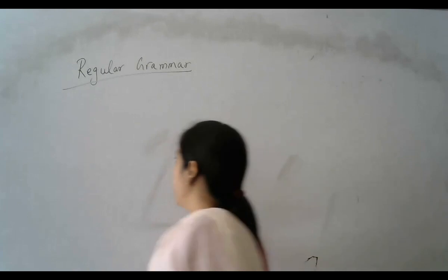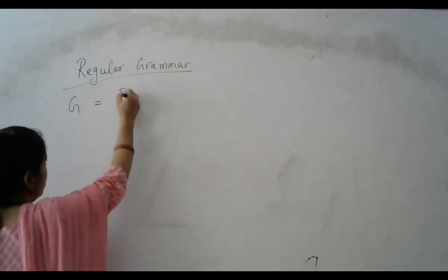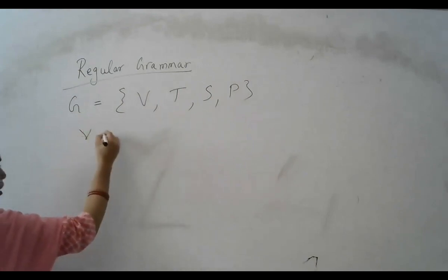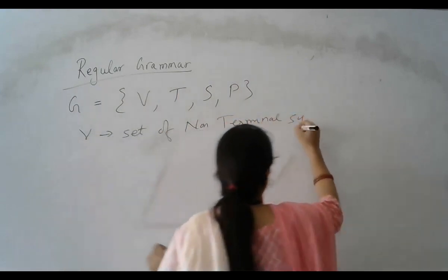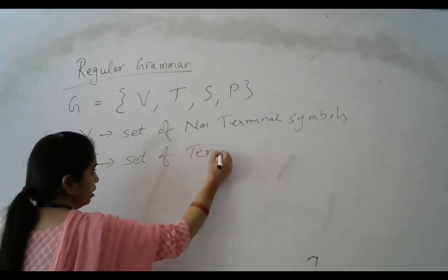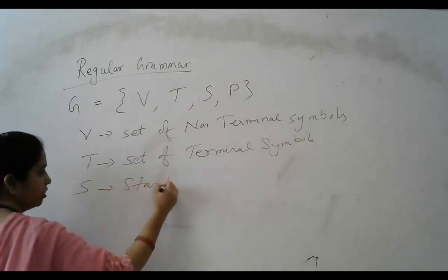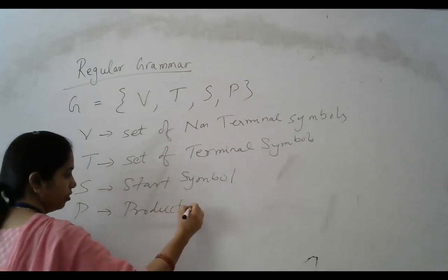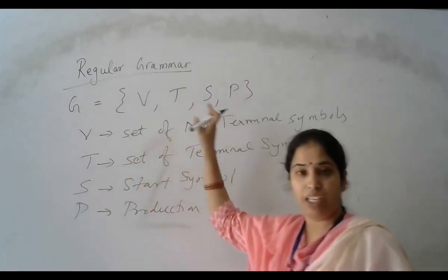So let's start the topic. If let G be a regular grammar then G is equal to (V, T, S, P). Where V is the set of non-terminal symbols, T is the set of terminal symbols, S is the start symbol, and P is the production rule. So let G be a regular grammar, then G can be represented as a set of (V, T, S, P).